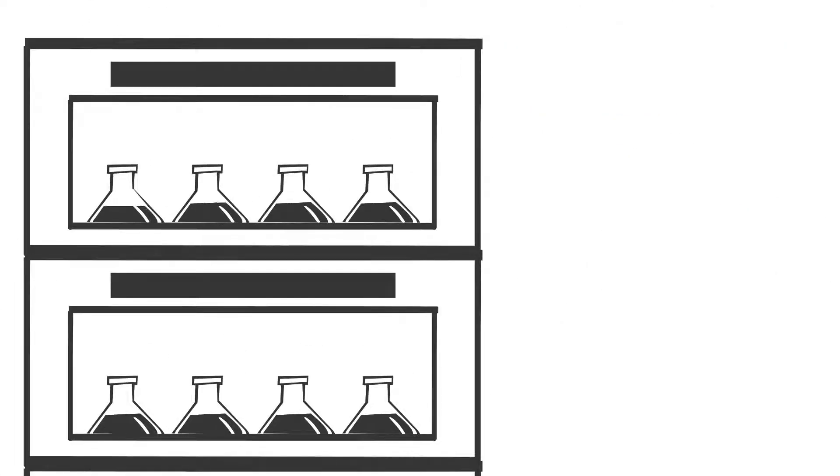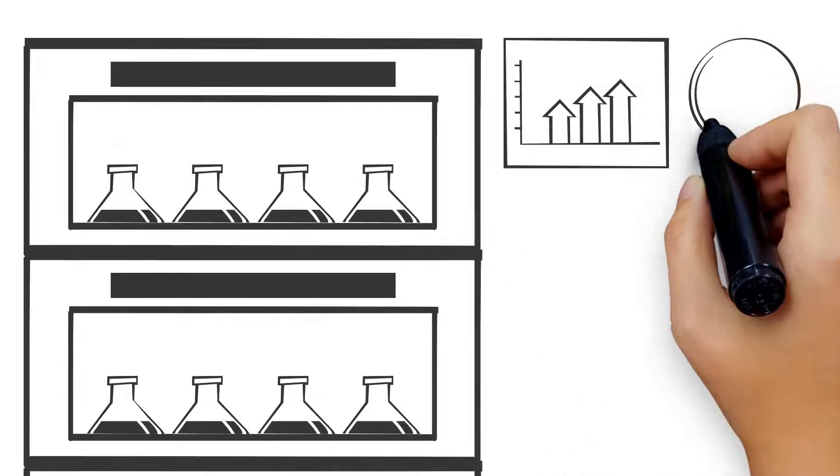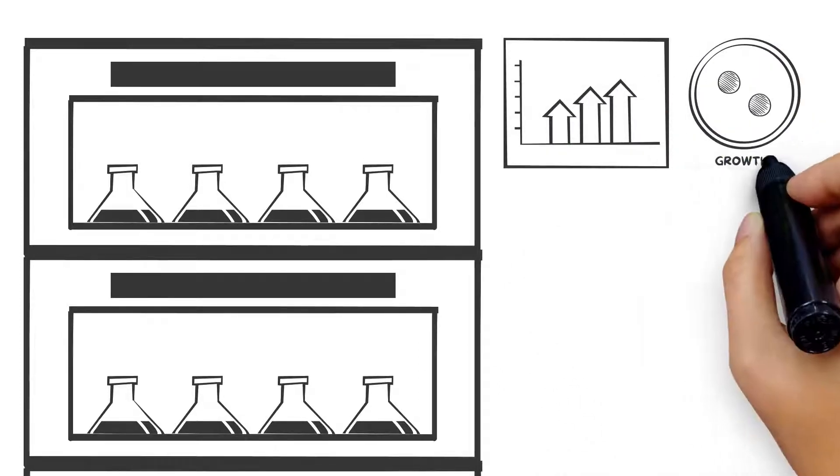During cultivation in an incubation shaker, water from the shake flasks evaporates gradually. This effectively increases the concentration of your culture medium, which can result in growth limitations.